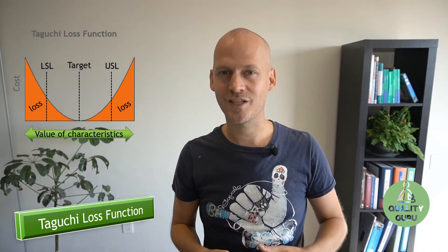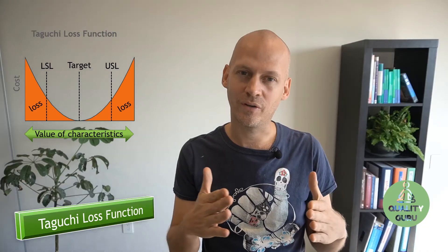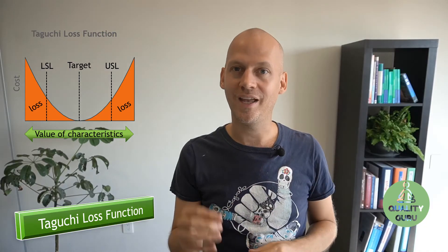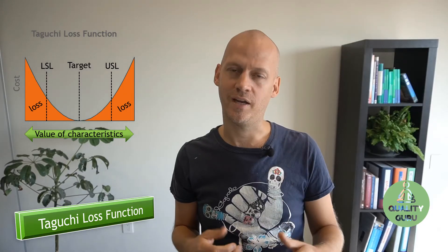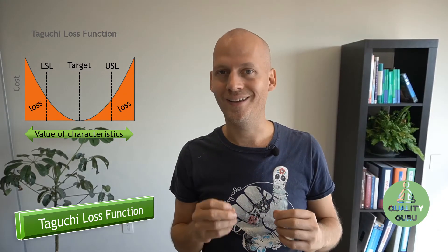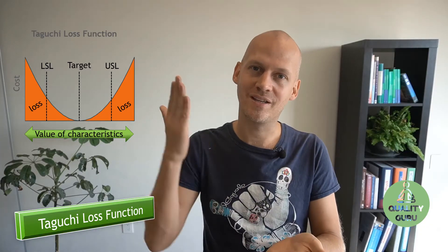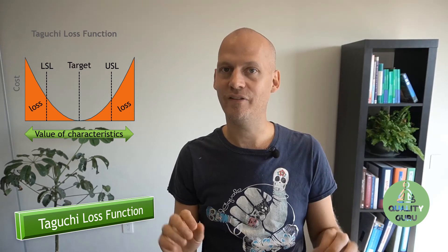Variation is the thing we want to dominate and reduce to a minimum to always be on target. So Taguchi came up with other concepts like the signal-to-noise ratio — it's all about reducing variation — and also the concept of robust design. That means design your process and your product in a way that always hits the target perfectly, in order to avoid any losses, any deviation, any variation from the target value.